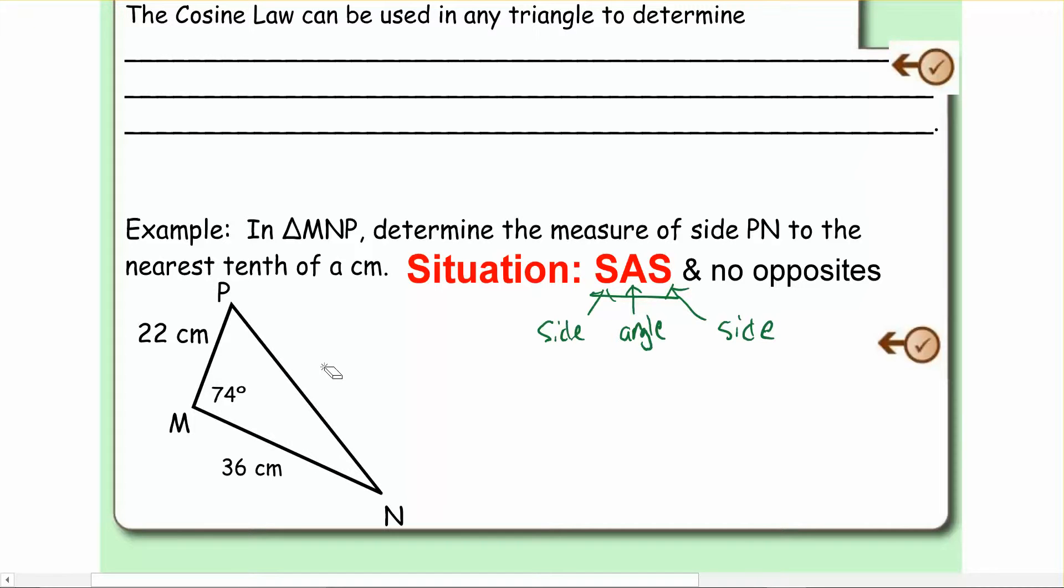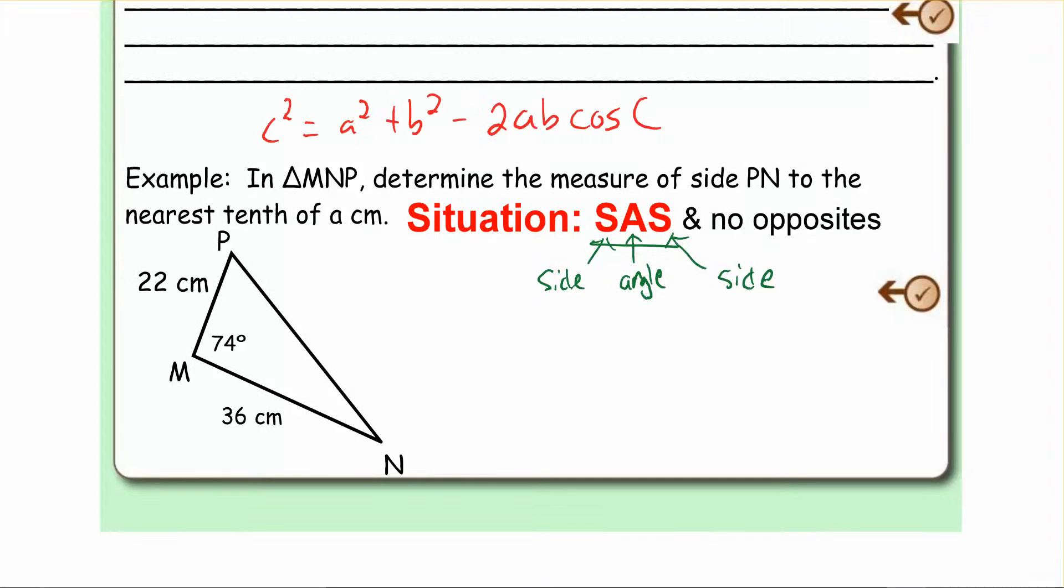So now that we know that, what we're going to do is just write down cosine law. So that's my cosine law up at the top. Now you might see that down here we've got n's and m's and p's instead of c, a, and b. It doesn't really matter. So let's say that I'm looking for, I'm just going to fill in the missing things here. So this would be side lowercase m, this would be side lowercase p, this would be side lowercase n.